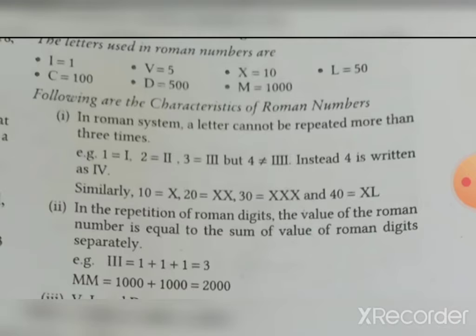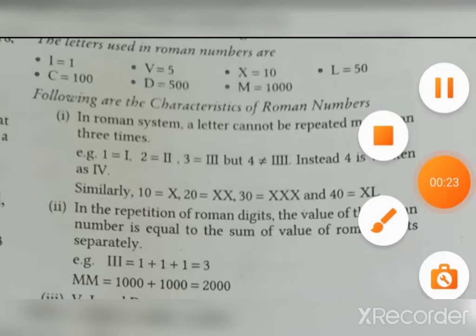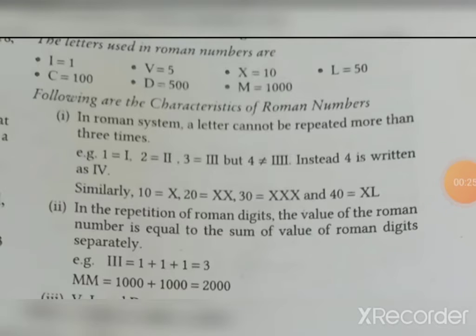Let's see Roman numbers. I is 1, V is 5, X is 10, L is 50, C is 100, D is 500 and M is 1000.